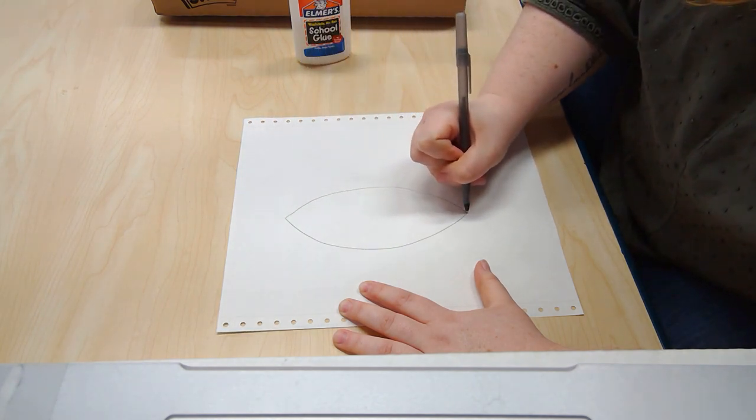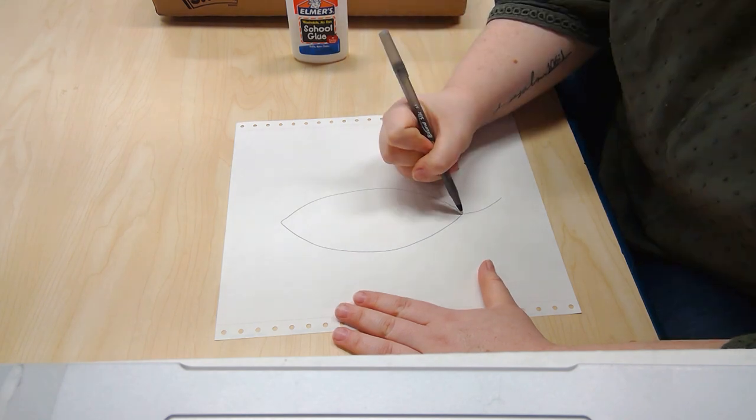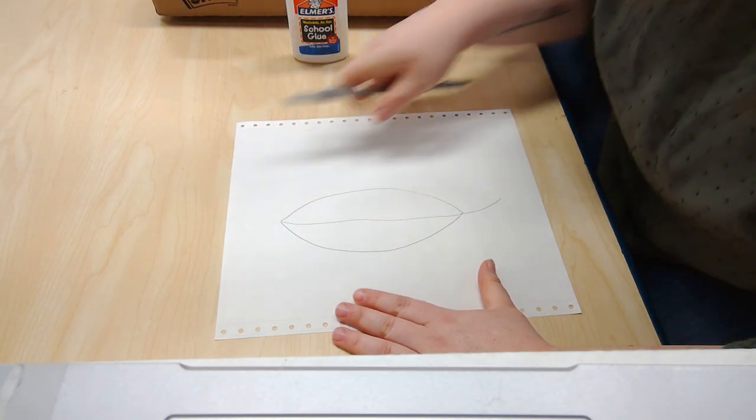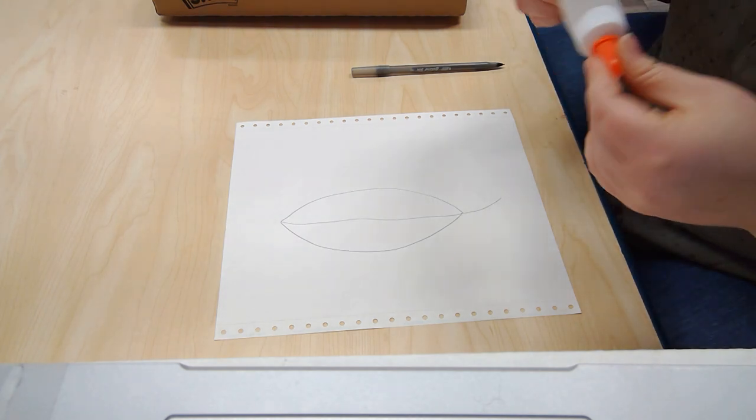Like this, and I'm going to draw the little stem on it, and maybe a line in the middle too like that. Next I'm going to go ahead and get my glue.